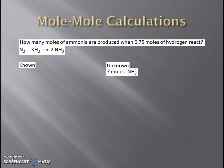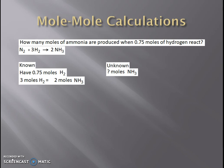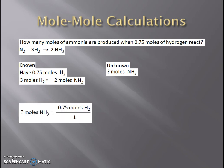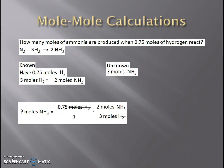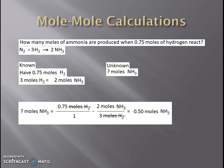The problem: how many moles of ammonia — that's our unknown — are produced when 0.75 moles of hydrogen react? That's how much we're going to start with. I need to relate my known to my unknown, and the only way I can relate hydrogen to ammonia is with that balanced chemical equation: three moles of hydrogen gas reacts and two moles of ammonia gas is produced. Taking my given over 1 and using that conversion factor, I put moles of hydrogen in the denominator and moles of ammonia in the numerator. Moles divided by moles reduces out, and I'm left with 0.5 moles of ammonia being produced.